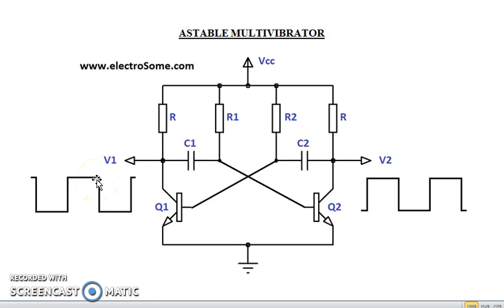And then, as in the previous state, when the capacitor C2 discharges completely, it starts charging towards the opposite direction through resistor R. When the voltage across the capacitor C2 is sufficiently enough to turn on the transistor Q1, Q1 turns on and capacitor C1 starts discharging.